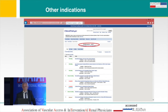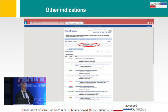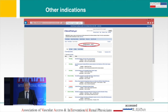I checked yesterday the ClinicalTrials.gov website. If you put in CytoSorb, it gives you 18 studies currently underway. These include sepsis in various flavors, but also elective cardiac surgery, pancreatitis, ARDS, and many more. I think we'll hear more about this device in the future.